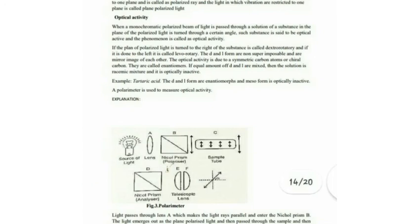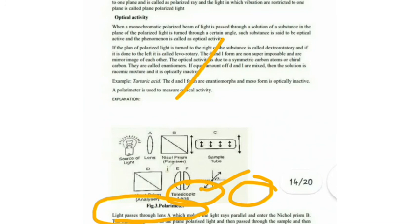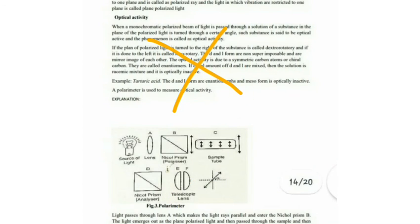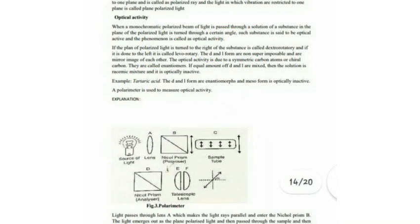Optical activity and then optical activity — first, optical activity. Ordinary light vibrates in all directions — this is ordinary light, electromagnetic light. But plane polarised light vibrates in a single direction — this is the polarised light. This is how we produce polarised light.